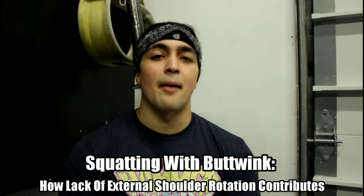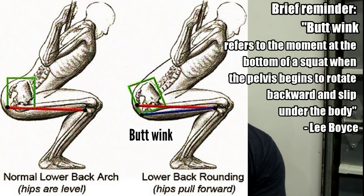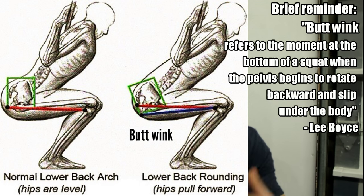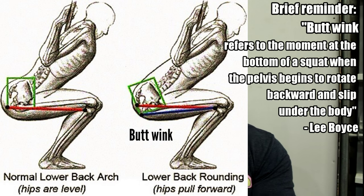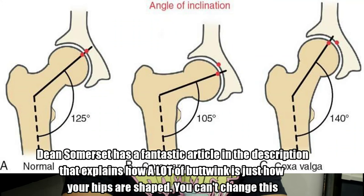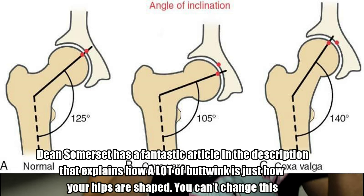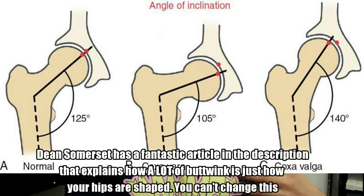Before I go on, I'm gonna link a fantastic video from Dean Somerset going over butt wink and how it's not really the hamstrings — also how to be aware that everyone's unique and different. You can't necessarily eliminate butt wink completely for every individual. This depends upon your physiology, but what I am going to talk about is having poor mobility in another area: shoulder lack of external rotation is probably the most common issue why people have an excessive butt wink, and it's kind of counterintuitive.